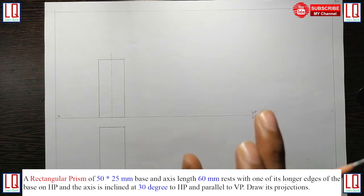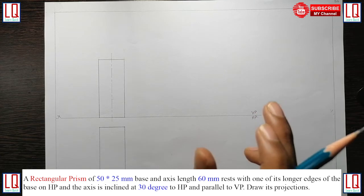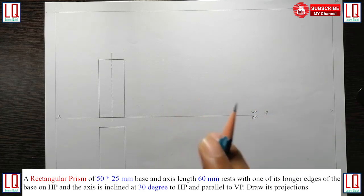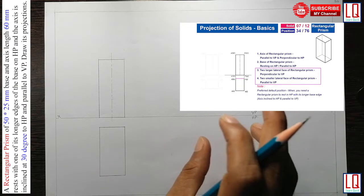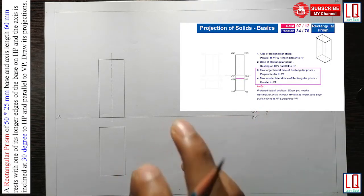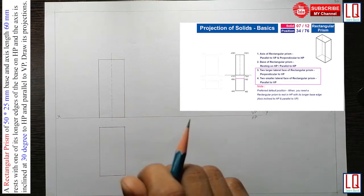The second part, we understand it rests on one of its longer edges of the base on HP. So, on understanding this statement, we have chosen the position 34 as the suitable position as a default position of solid type 7.